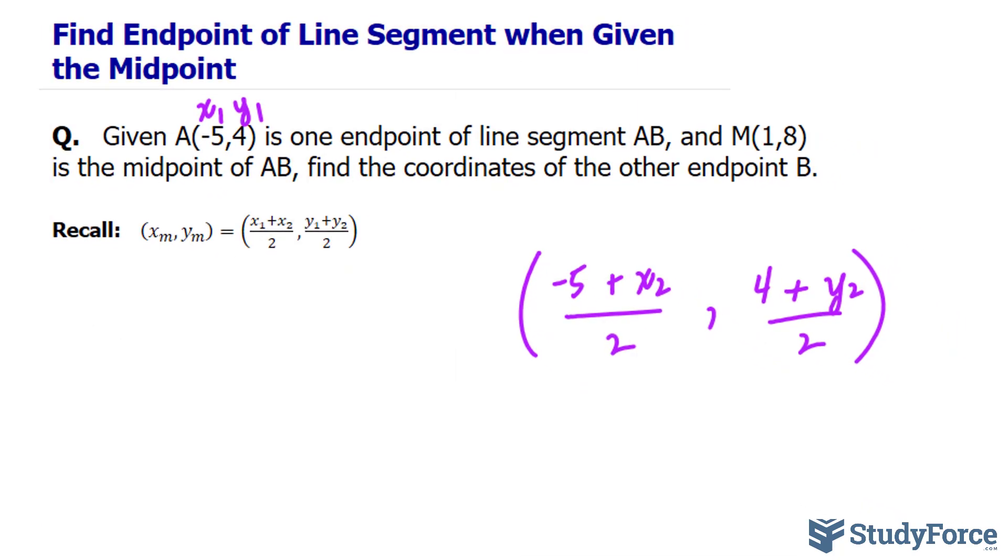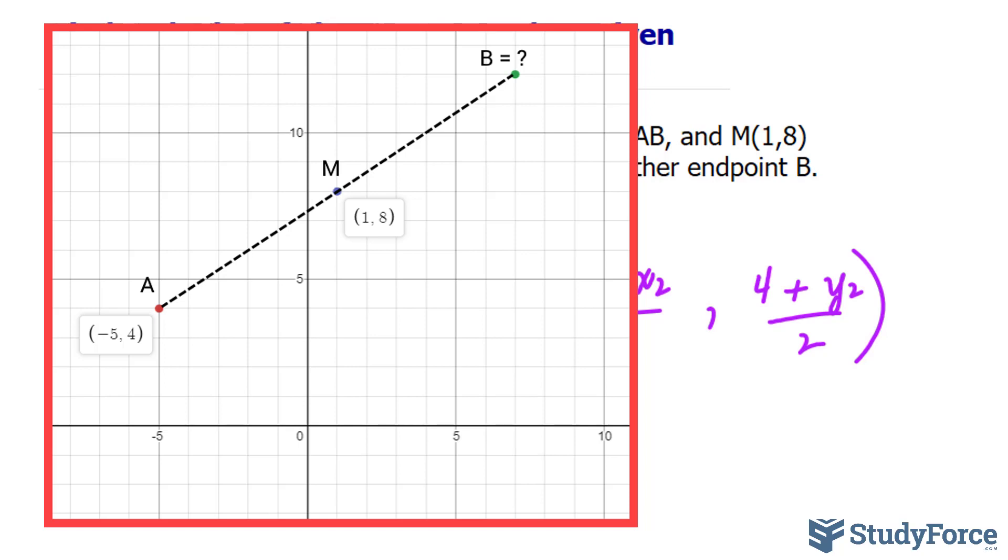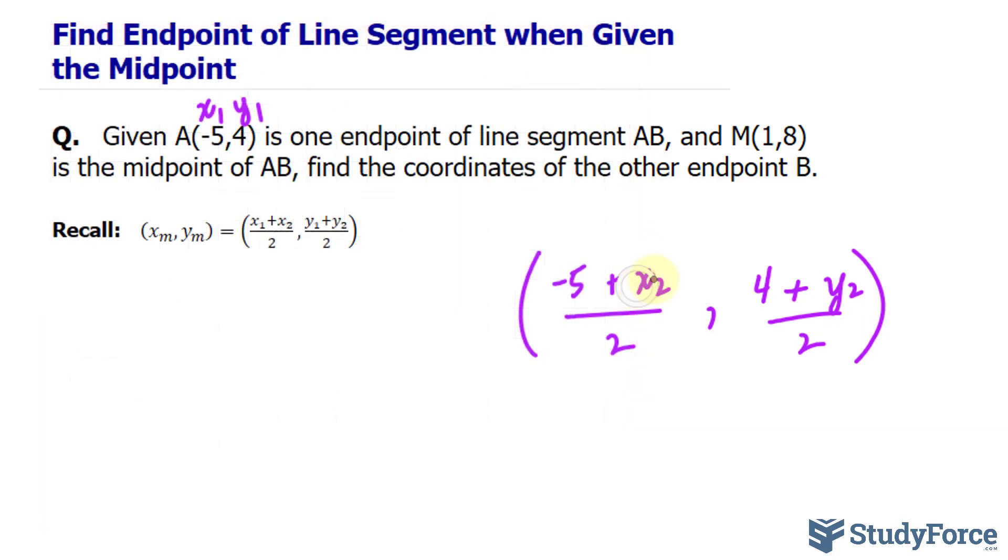Now, in case you're confused as to what we're doing, just pretend that we have a straight line in 2D space on an xy plane. We know one endpoint of that line, we know its midway point, but we don't know the other endpoint. And that's what we're looking for. So to find x sub 2 and y sub 2, remember this is like taking the average of the x values, and this is like taking the average of the y values.